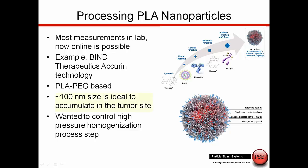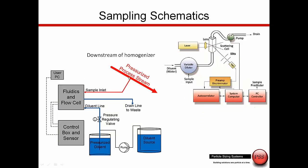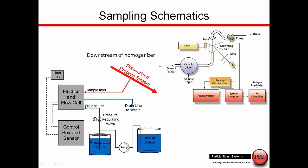The particle size is critical here. In creating this, there is a step involving a high-pressure homogenizer. Downstream of the homogenizer, we take the sample and put it through the fluidics. The sample comes in, we have a dilution stream, then take the diluted sample up into the measurement cell, perform the measurement, clean up, and move on to the next sample.